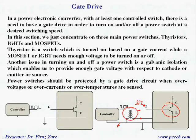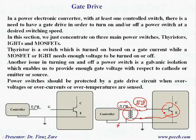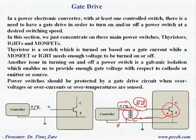Because these transformer terminals are floating, we can connect one terminal to the emitter and the other to the gate. Whatever signal we have from the controller, we can generate the same signal — the same voltage waveform, even at a different voltage level — and connect it to the transistor. In this case, it is possible to have galvanic isolation and turn on and off different power switches which have different emitter voltages and different gate voltages, even when the emitter is not connected to ground.